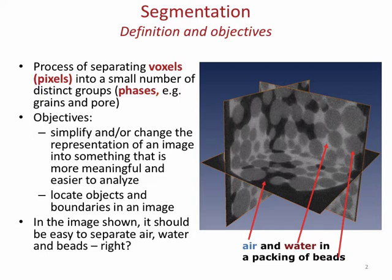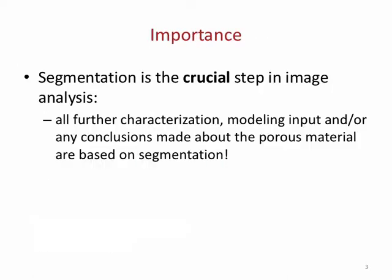How many phases we have depends on what we image. In this case it's three, but we might simply be interested in pore space versus solid space, or fluid phases versus solid phases — in which case we'd have two. It depends on your application. I cannot stress enough that segmentation is the crucial step in image analysis because everything I want to do depends on it. For unresolved images you're just dealing with grayscales, but in most cases where you have a resolved image, you need to segment first before doing anything else.